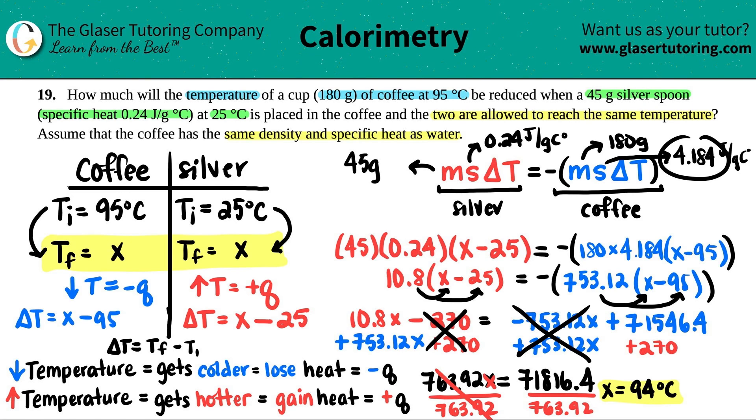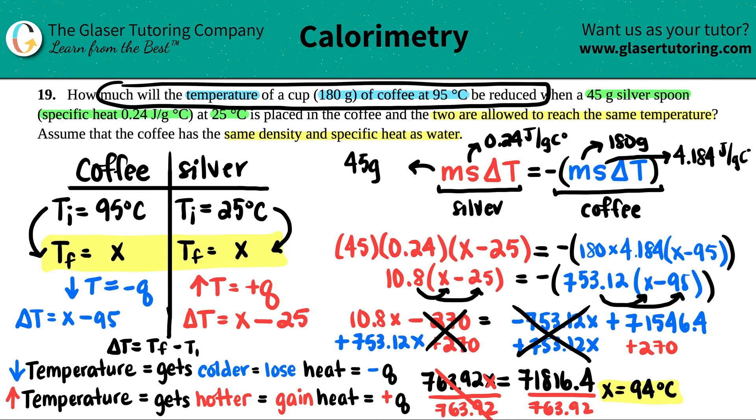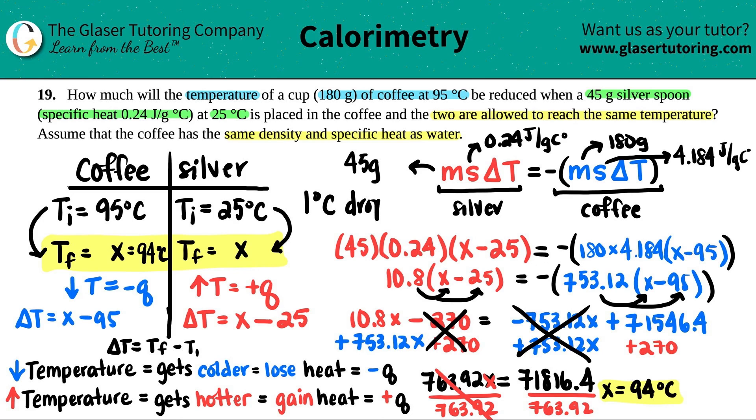Because the specific heat of water, aka the coffee is so high. It takes so much amount of effort to raise water's temperature. As we've all noticed, trying to boil water, it takes a decade. So you won't see any really change in the coffee temperature, but the silver spoon is going to heat up real fast. Now, the question asked, how much will the temperature of the coffee be reduced? It didn't ask for what the final temperature of the coffee is. They just said, how much will the temperature be reduced? So now if I know that the final temp is 94 degrees Celsius, it only dropped by one degree. So one degree Celsius drop. And that is your final answer.